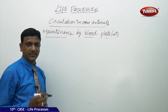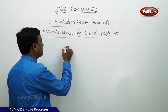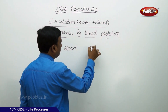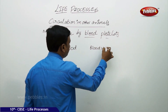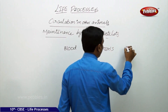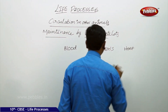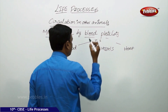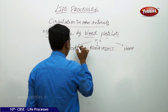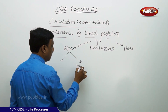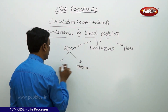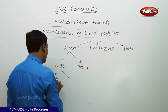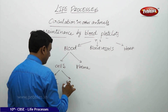When we discuss the different parts of the transport system, the transport system consists of blood, blood vessels, and heart. These are the three major parts of the transport system. Among these, the blood consists of plasma and cells. Among these cells, we discussed about WBC and RBC.